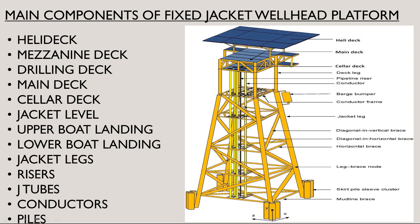We will discuss the risers, conductors, and jacket in detail in upcoming slides. You can also see the conductor frame. These are the jacket legs — four legs — along with the pile cluster and pile sleeves. These are the bracings of the jacket legs, including diagonal bracings and horizontal bracings. The lowest level is called the mud line bracings, or mud line level.